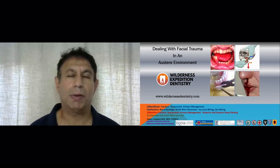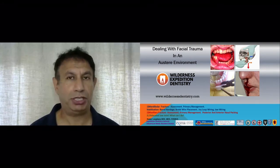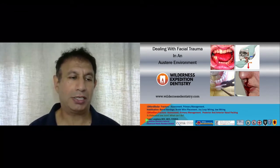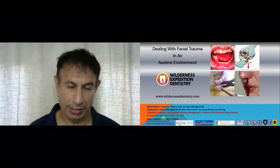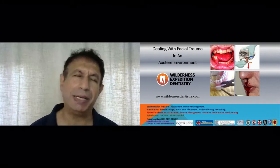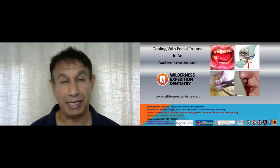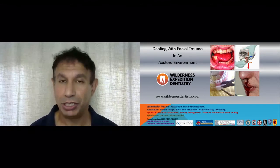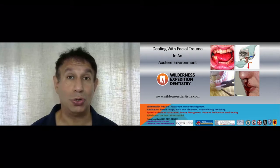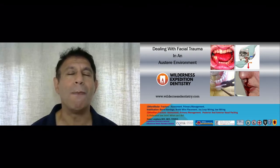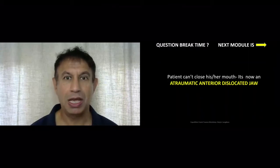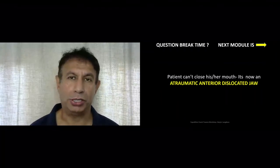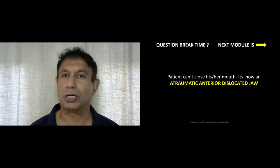In the third part of our fasciotrauma workshop, we will go through dislocation of the jaw joint. We will essentially be discussing an anterior atraumatic jaw joint dislocation. The jaw joint is also known as the temporomandibular joint. In this section, we will discuss what to do when somebody cannot close their mouth.